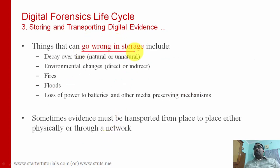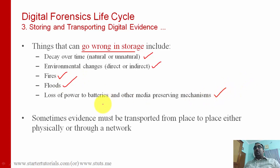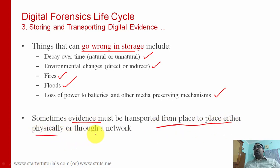Different things that can go wrong while storing the evidence: the evidence can decay over time either naturally or unnaturally. The evidence might be destroyed because of changes in the environment — there can be fires, floods, loss of power, or battery failure. Sometimes the evidence must be transported from one place to another, either physically or through a network, and while transporting, proper care must be taken so the evidence is not modified or destroyed.